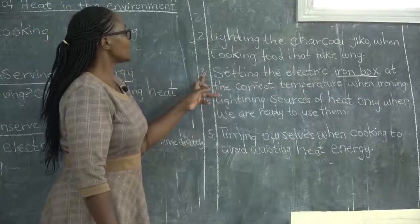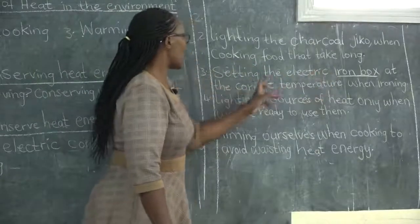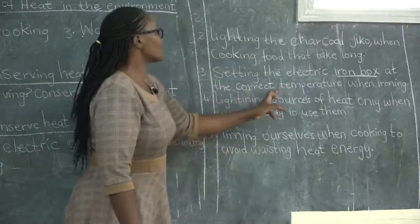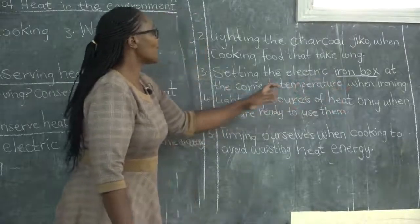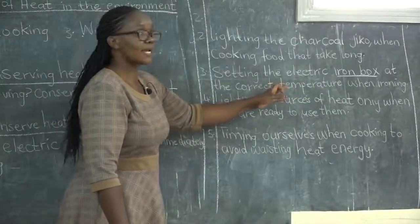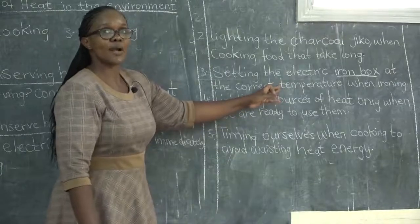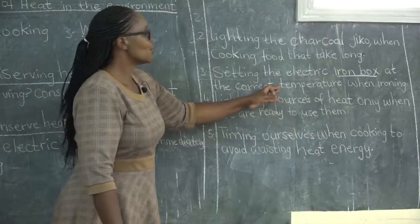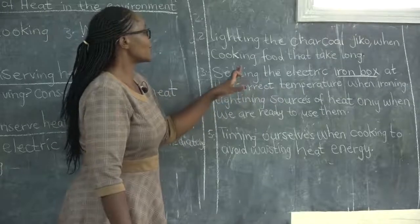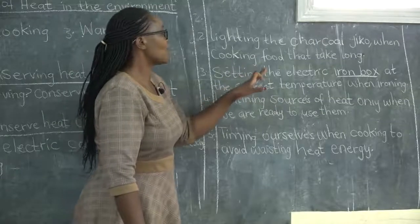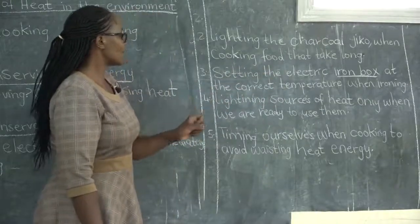Another point is setting the electric iron box at the correct temperature when ironing. Remember, if you don't set the right temperature, it can destroy your clothes. So you are supposed to make sure you set the electric iron box at the right temperature.